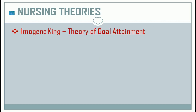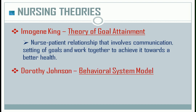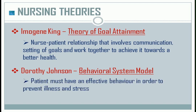Imogene King's theory of goal attainment is about the nurse-patient relationship that involves communication, setting of goals, and working together to achieve them towards better health. Dorothy Johnson's behavioral system model states that the patient must have effective behavior in order to prevent illness and stress.